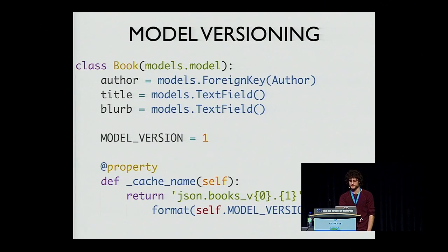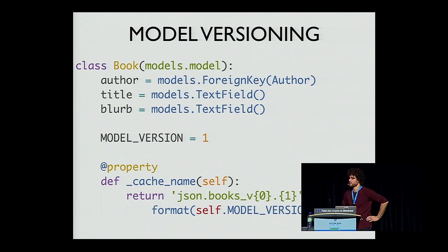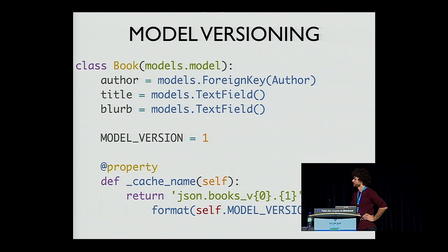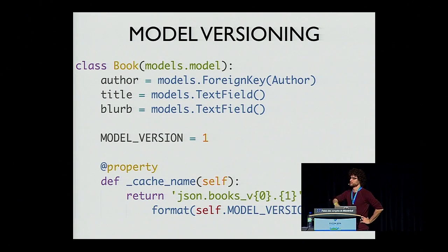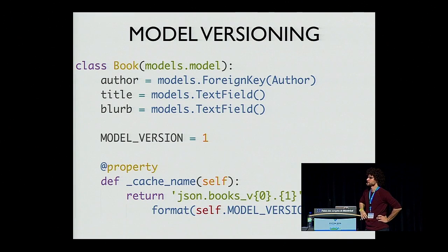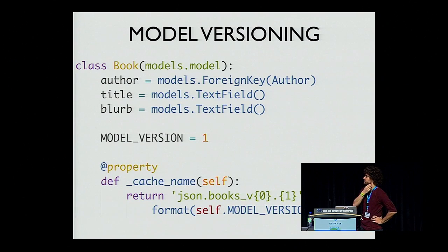One smart thing is to use model versioning — adding a `model_version` property to your model and including it in the key name. That's very useful because when you modify your model — adding a field, removing a field — you just bump up the model version and all your memcached hits will miss, forcing a refresh. Some frameworks like Django support this out of the box; others don't, so read your docs.